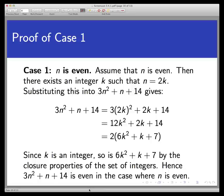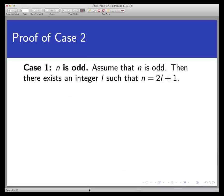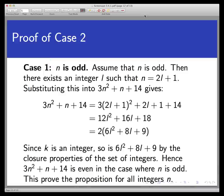So case two, let's assume that n is odd. Then there exists an integer l such that n = 2l + 1. Substitute this into 3n² + n + 14 and compute. And after a few lines we will have our result. Since these two cases cover all possibilities of integers and the proofs are correct in both cases then we've proven the result in its entirety.